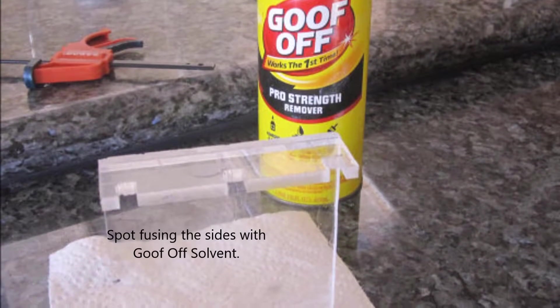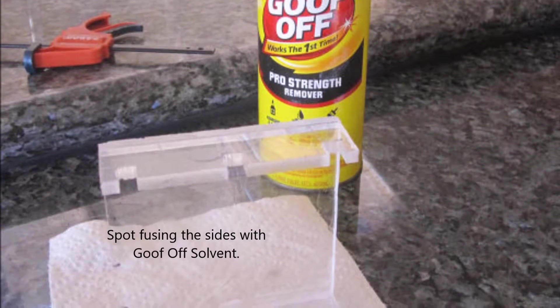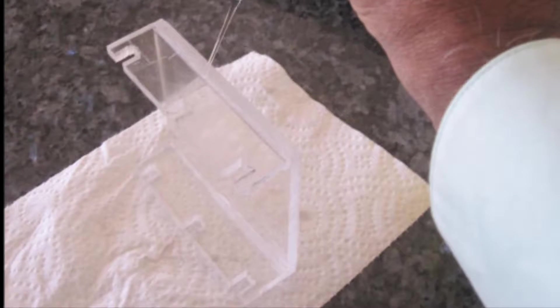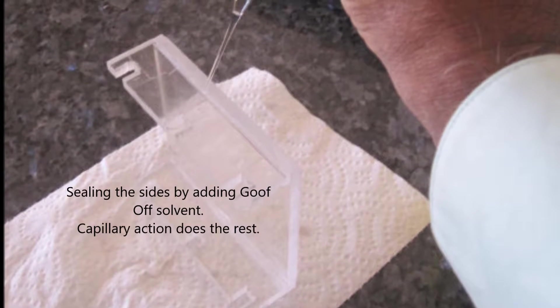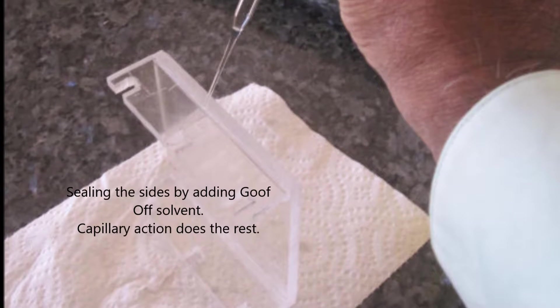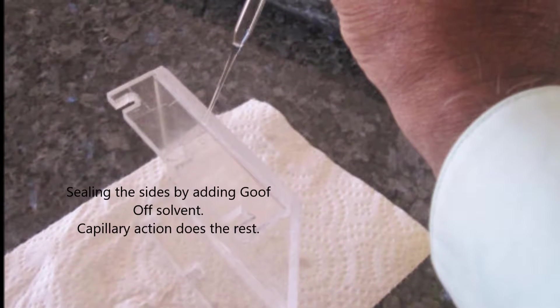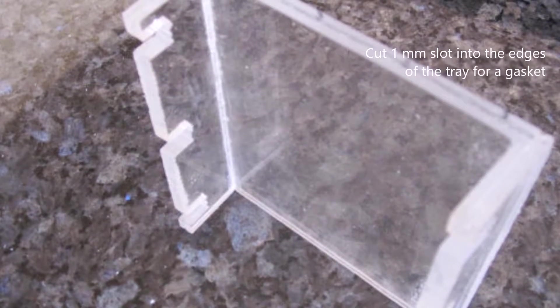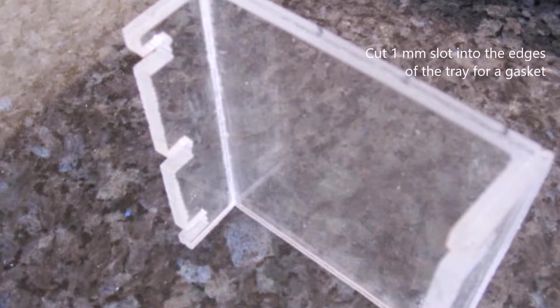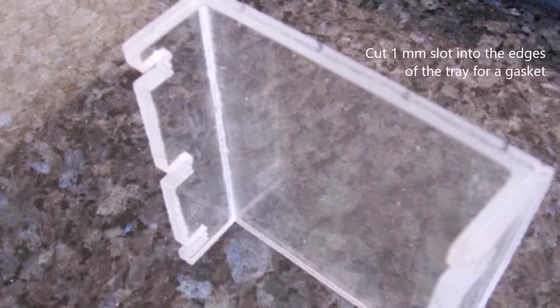Surprisingly, this goof-off stuff I bought from Harbor Freight acts as a pretty good glue/fusing agent. I first put little drops to hold the pieces temporarily together, and then fill the capillary gap with more solvent - it worked very well. Here it's hard to see, but you can see a slot cut on the edge of the plastic which will hold the gasket.